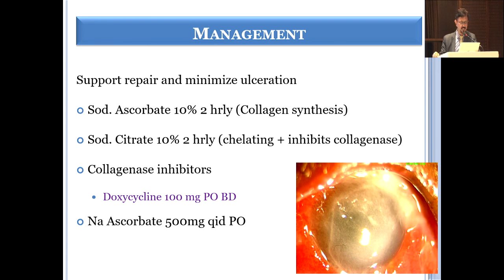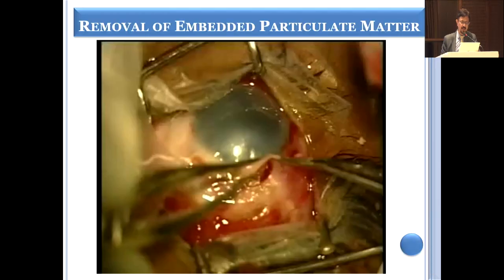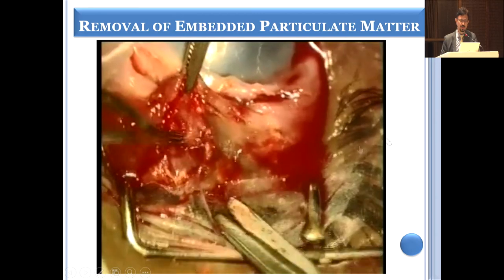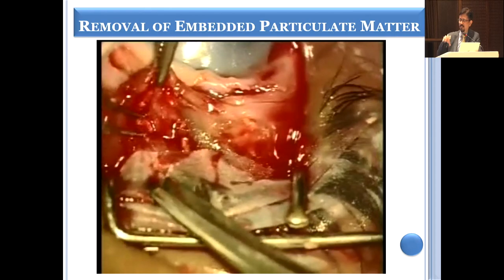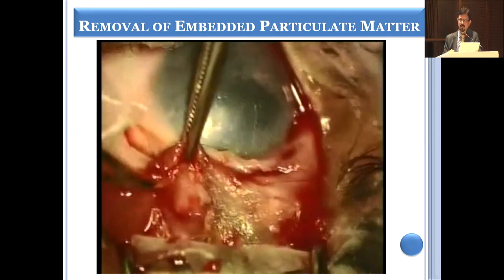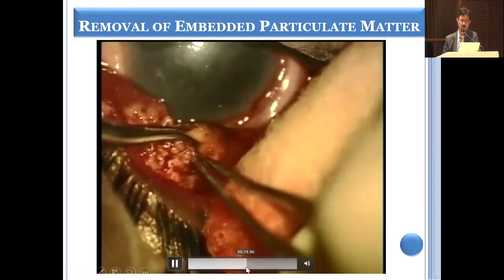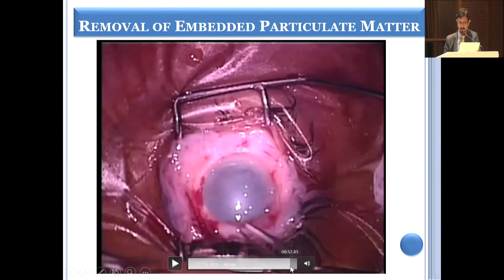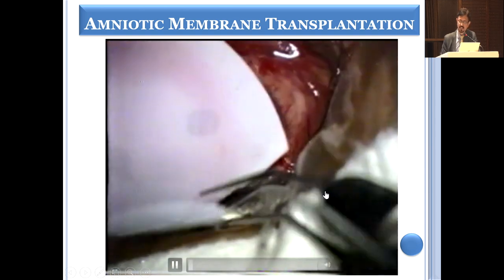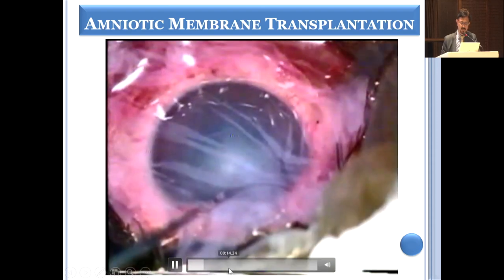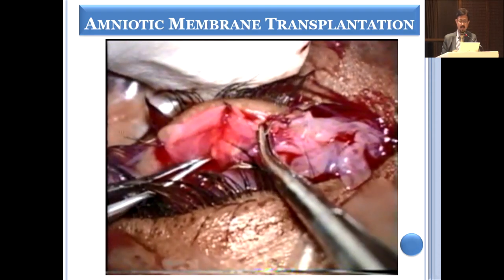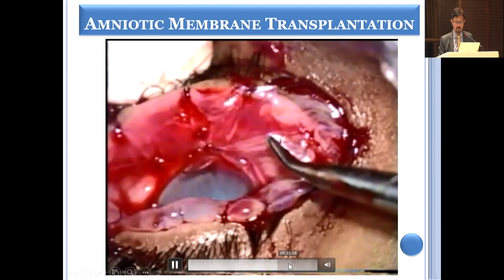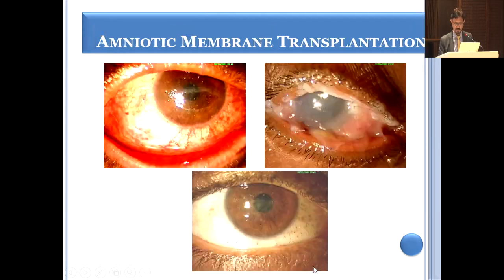Topical antibiotic, topical steroid, lubrication, sodium ascorbate topically and systemically to improve collagen synthesis, and sodium citrate as a chelating agent are given. Embedded alkaline particulate matter under the conjunctiva causes scleral melt and must be removed by conjunctival dissection. Amniotic membrane transplantation over the entire cornea, bulbar conjunctiva, and palpebral conjunctiva promotes epithelialization, reduces pain, and improves healing significantly.